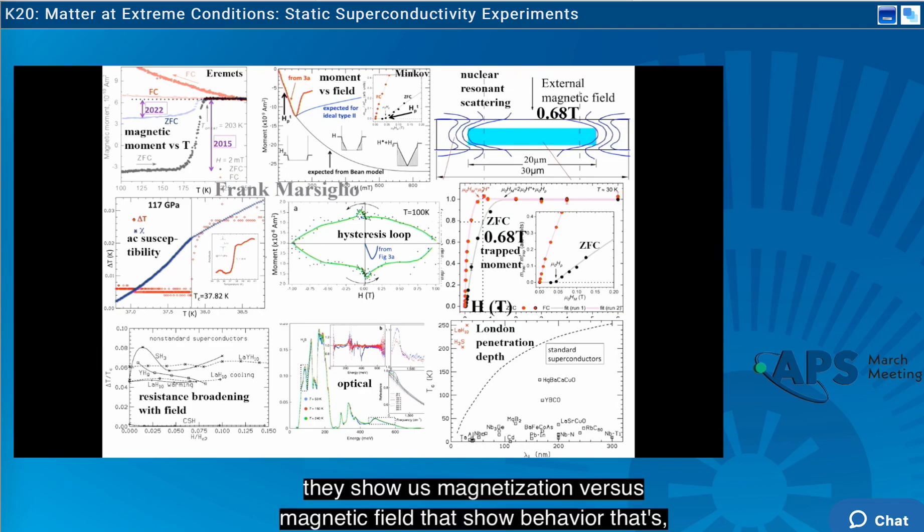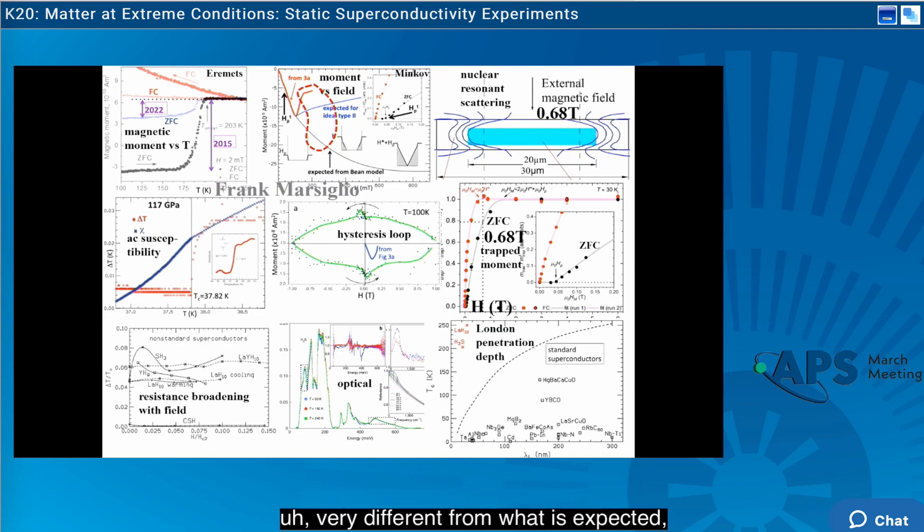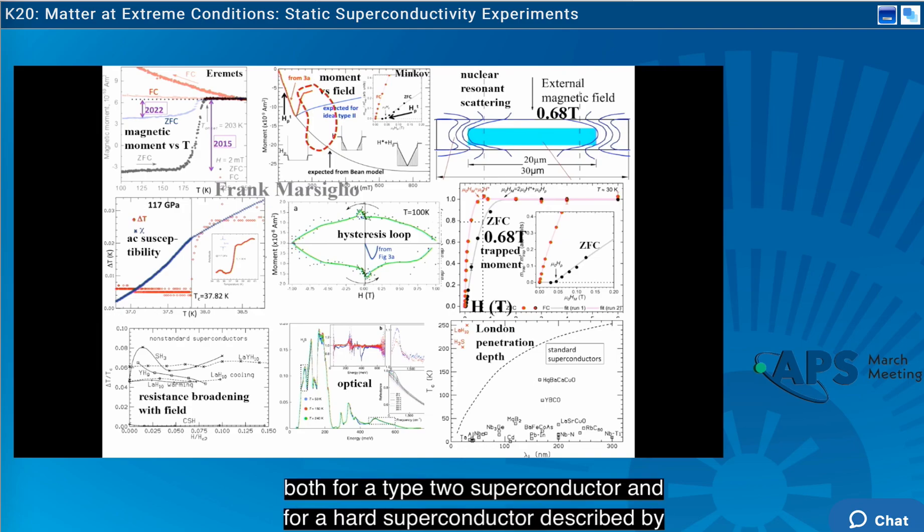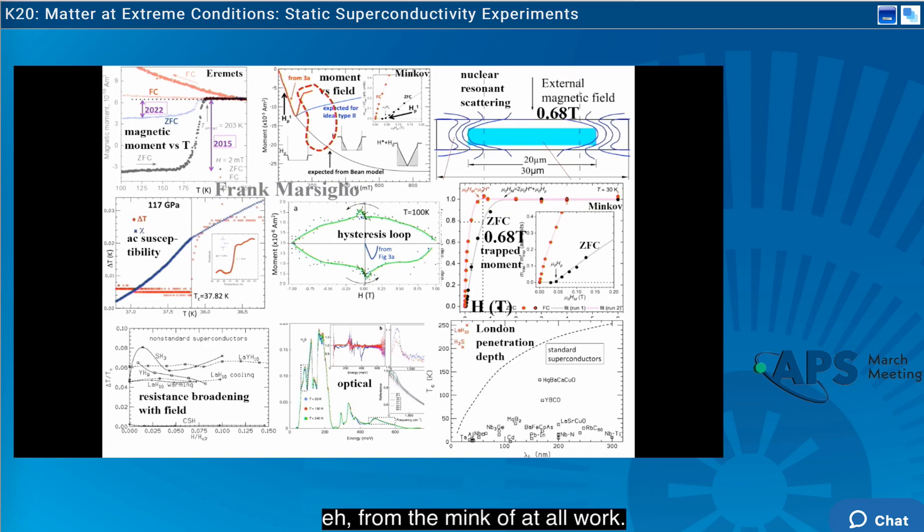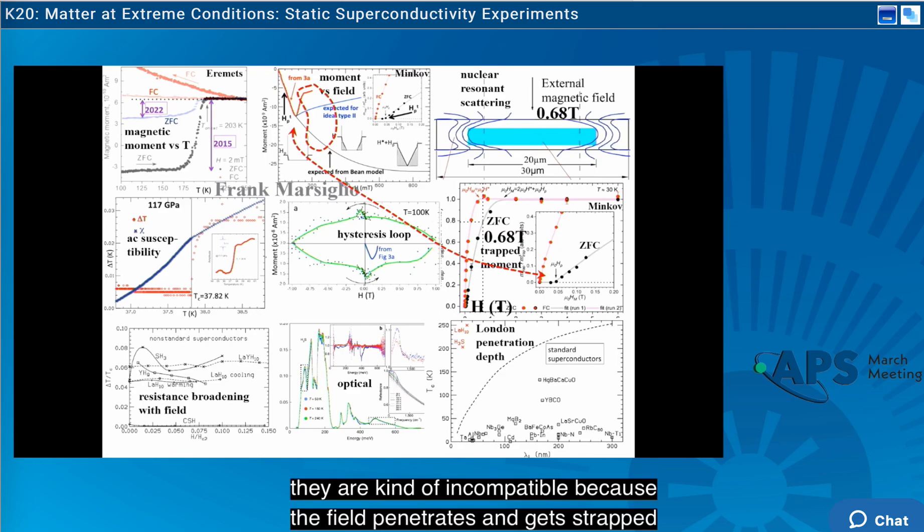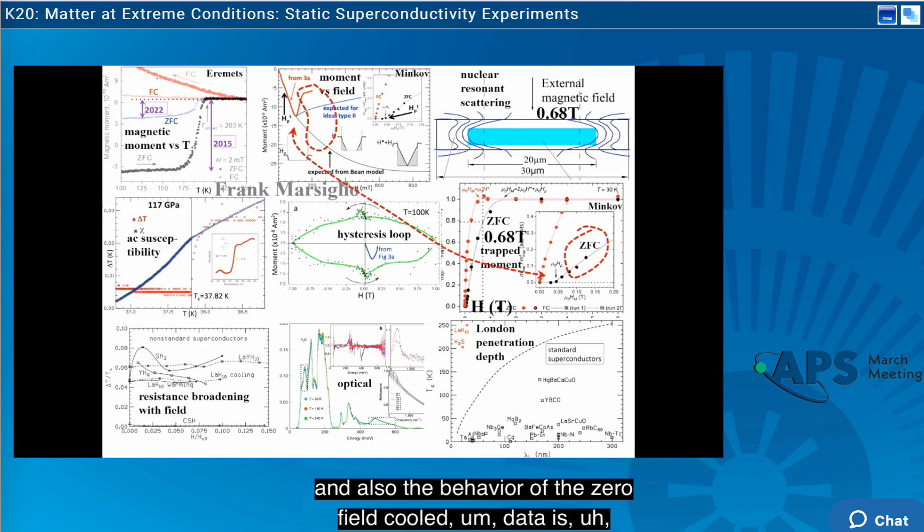they show us magnetization versus magnetic field that show behavior that's very different from what is expected both for a type two superconductor and for a hard superconductor described by the Bean model. More recently, we saw trapped moment measurements from the Minkov et al work. But if you look and compare the measurements, they are kind of incompatible because the field penetrates and gets trapped here, and the same field here is excluded from the sample. So when you, and also the behavior of the zero field cooled data is, as we showed, not physical.